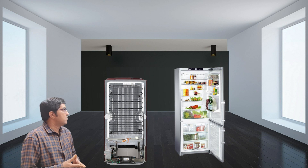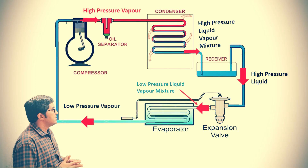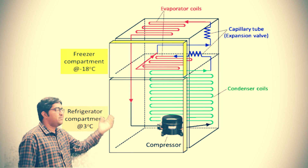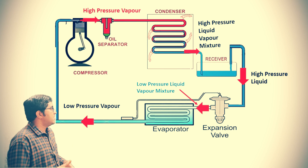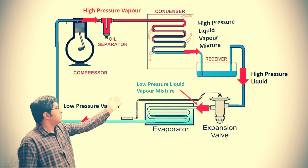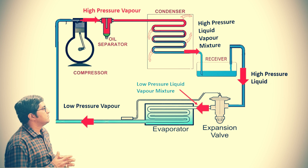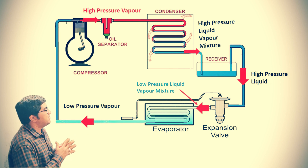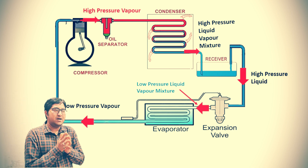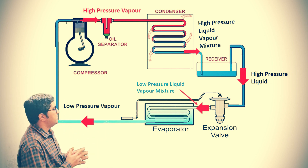The function of the compressor is to increase the pressure, so by default temperature also increases. But our objective is to reduce the temperature in the evaporator. So this high pressure vapor refrigerant rejects its heat to the surrounding through the condenser. The outlet of the condenser is a high pressure liquid-vapor mixture, which then enters into the receiver — a vessel that collects the refrigerant.